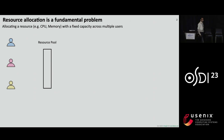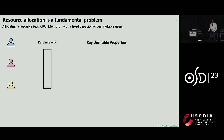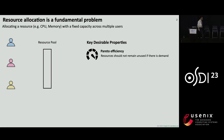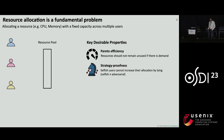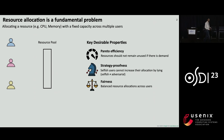Allocating a resource with a fixed capacity across multiple users is a fundamental problem. Depending on the context, this resource could be CPU, memory, network bandwidth, or anything else. There are three key desirable properties for any resource allocation mechanism. The first is Pareto efficiency, which says that resources should not be wasted when there is sufficient user demand — this ensures high utilization. Second is strategy-proofness, which means that selfish users should not be able to gain benefits by lying about their demands, ensuring users have no incentives to cheat. And finally, fairness, which says that resource allocation should be balanced across users.